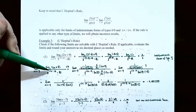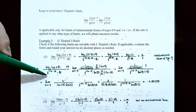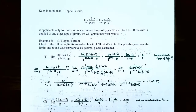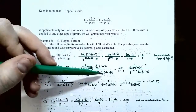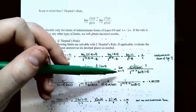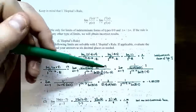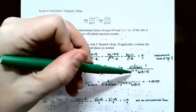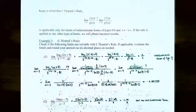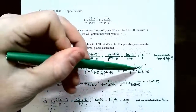For the denominator, 3 to the (−5x − 16) is an exponential function, so its derivative is itself — 3 to the (−5x − 16) — times ln(3), times the derivative of the inside function, d/dx of (−5x − 16). Taking those inside derivatives: d/dx of (2x + 9) = 2 and d/dx of (−5x − 16) = −5. So we now have the limit as x approaches −4 of 2 divided by (2x + 9)·ln(6), all divided by 3 to the (−5x − 16) times ln(3) times (−5).